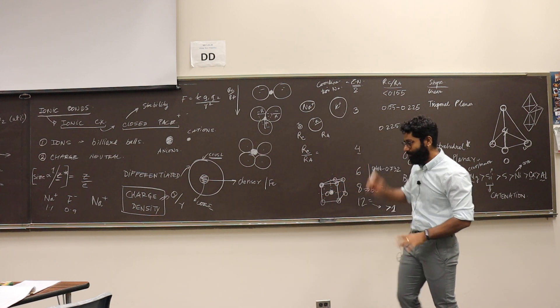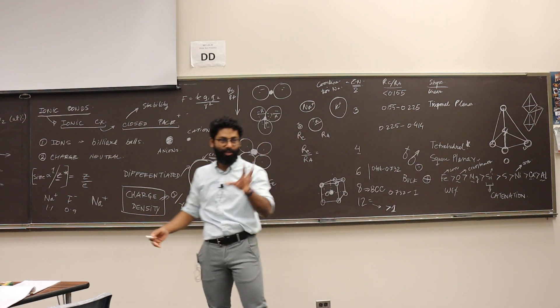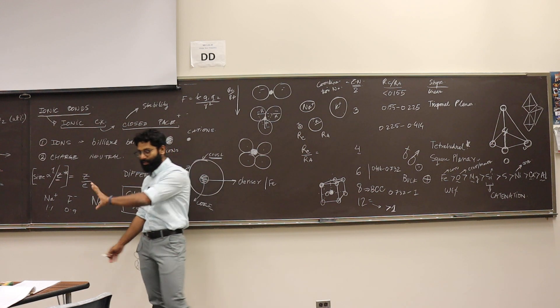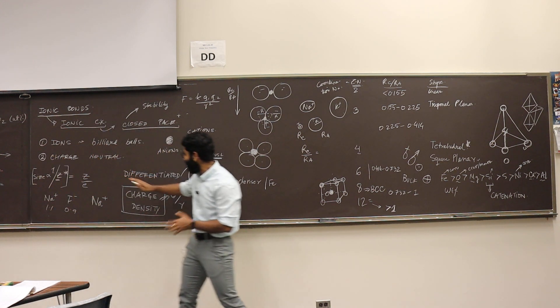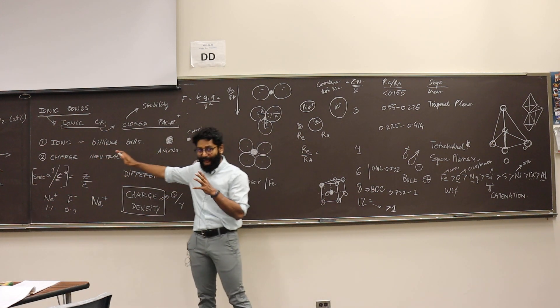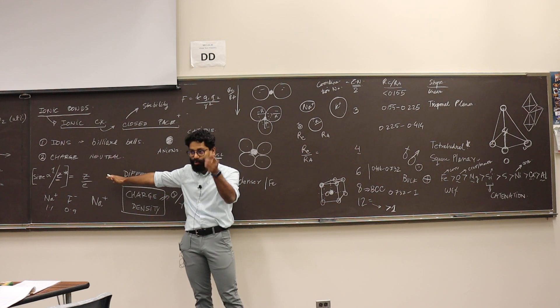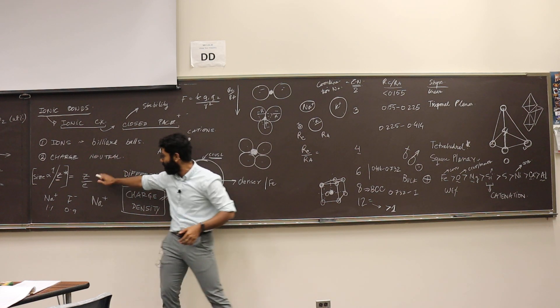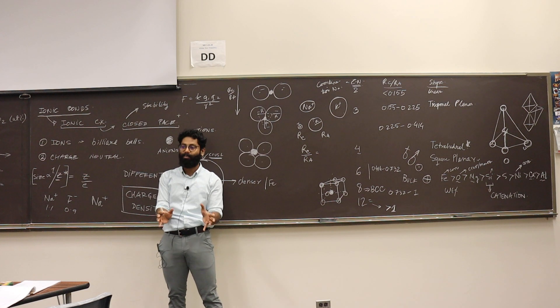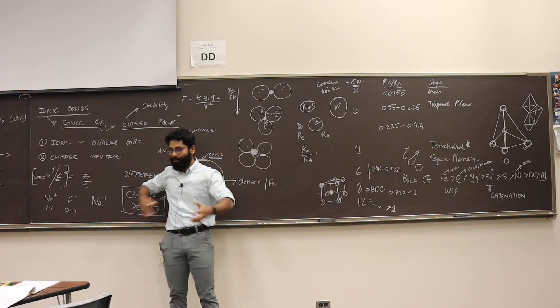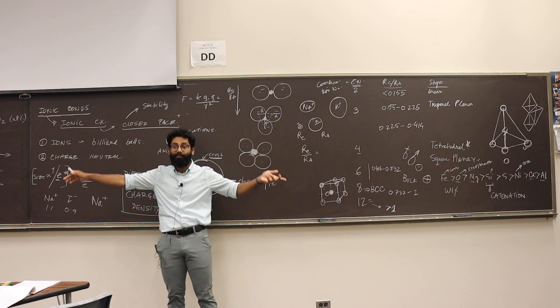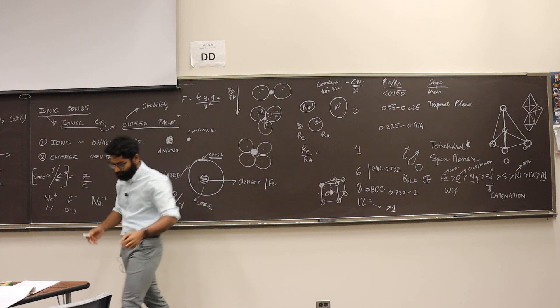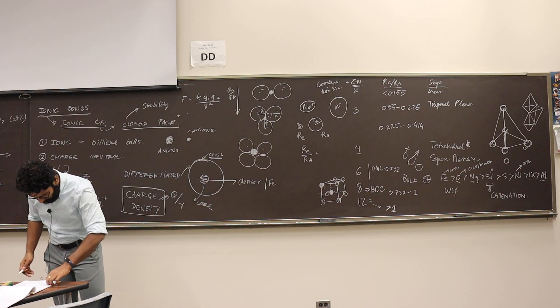So when we talk about this, you have to keep in mind that charge density becomes really important. Understanding the sizes of isoelectronic species and organizing by size becomes really important, not just for comparing sizes but for many different kinds of purposes.